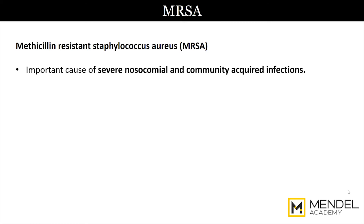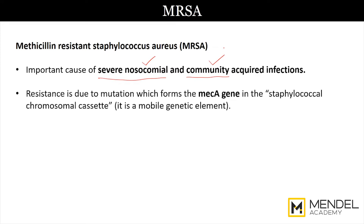MRSA is an important cause of severe nosocomial infections nowadays, as well as community-acquired infections. It is spreading into the community and into the hospitals. This MRSA resistance is due to a mutation which forms what is called the MEK-A gene, or the MEKA gene, and this occurs in a part of the Staphylococcus called the staphylococcal chromosomal cassette, which is a mobile genetic element.